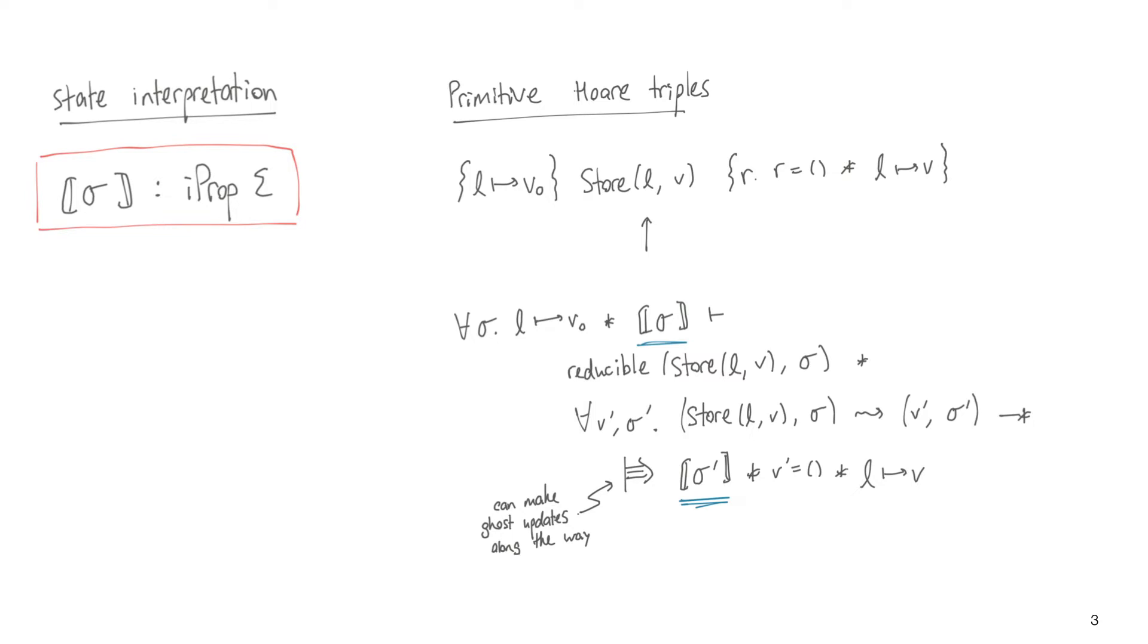Then the state interpretation holds in the new state and the new state has the post condition resources, and also the value that store reduced to actually satisfies the post condition, which in this case just says that the return value is unit.